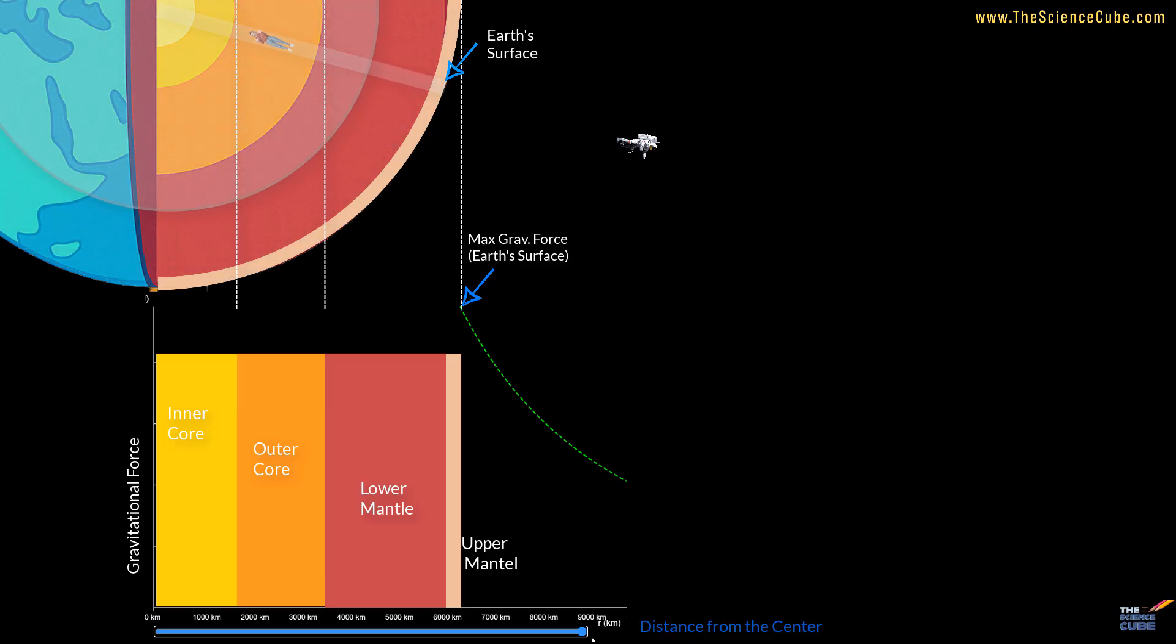As we discussed earlier, the outer shell has no net force on the particle. You could imagine it as peeling an onion, layer by layer, and as you go deeper, each outer layer you peel away doesn't affect gravity anymore. Only the core that's left inside your current radius matters.